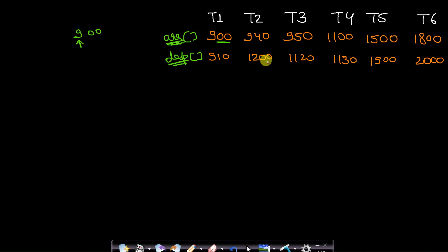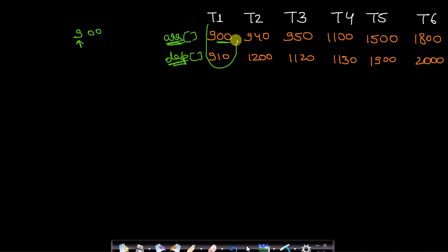We have six trains. Train T1 arrives at 9 o'clock and departs at 10 minutes past 9. Train T2 comes at 9:40 and departs at 12, and so on. To find the minimum number of platforms, one simple way is to take one interval — say T1 — and compare it with all remaining intervals to see how many are coinciding, i.e., how many are in intersection.